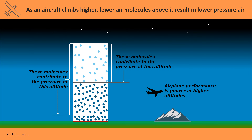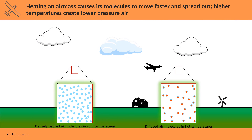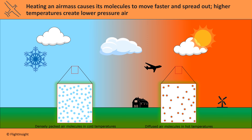Aircraft performance is poorer at higher altitudes. Heating an air mass causes its molecules to move faster and spread out. Higher temperatures create lower pressure air, and aircraft performance is poorer in hotter temperatures.